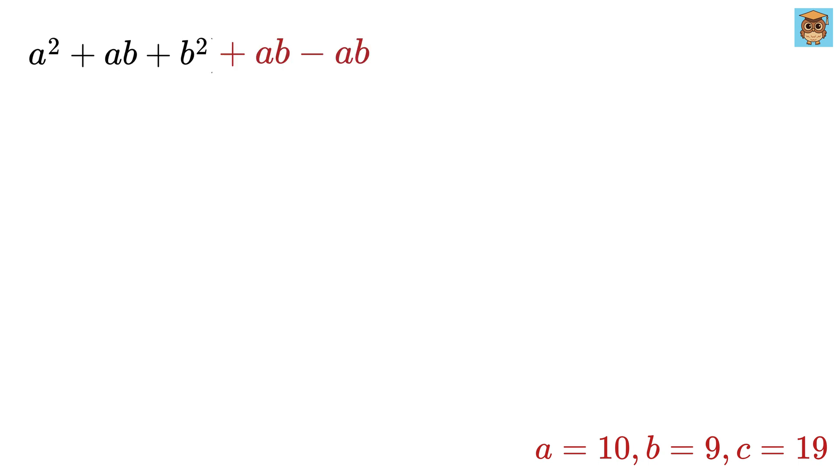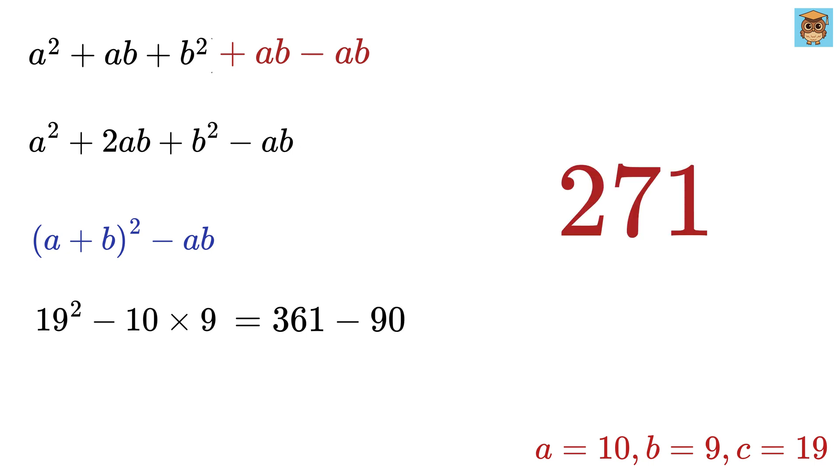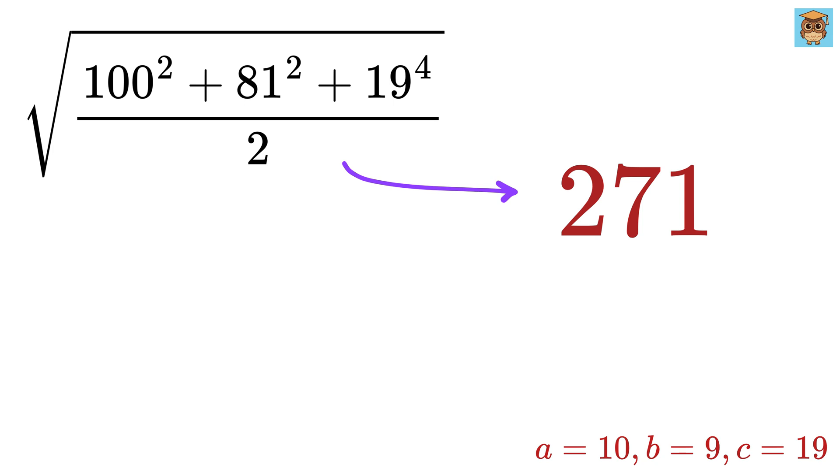Now add and subtract AB from this to get A squared plus 2AB plus B squared minus AB. This will be A plus B whole squared minus AB. Finally put A as 10 and B as 9 to get this as 19 squared minus 10 times 9, or this is 361 minus 90 or 271, which is our final answer.